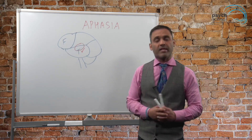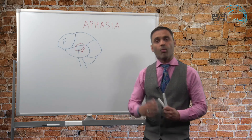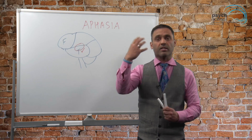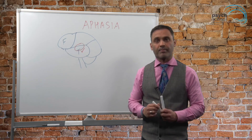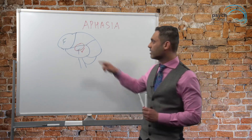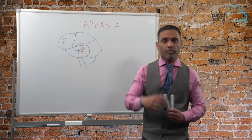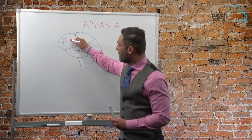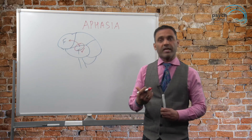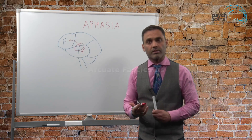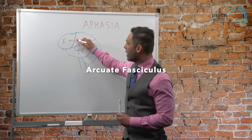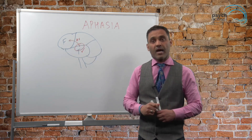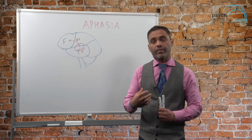The next step in the speech pathway is that after understanding, we need to communicate and talk. There is a connection from the temporal lobe to the frontal lobe, and this pathway is known as the arcuate fasciculus. The arcuate fasciculus helps us specifically with repetition.